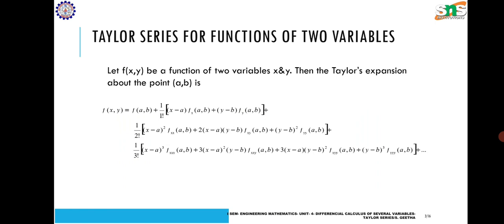Continuing, + (1/3!) × [(x − a)³·f_xxx(a, b) + 3(x − a)²(y − b)·f_xxy(a, b) + 3(x − a)(y − b)²·f_xyy(a, b) + (y − b)³·f_yyy(a, b)] + etc. Here f_x, f_y, f_xx, f_yy, f_xy, f_xxx, f_xxy, etc. are all partial derivatives of the given function.